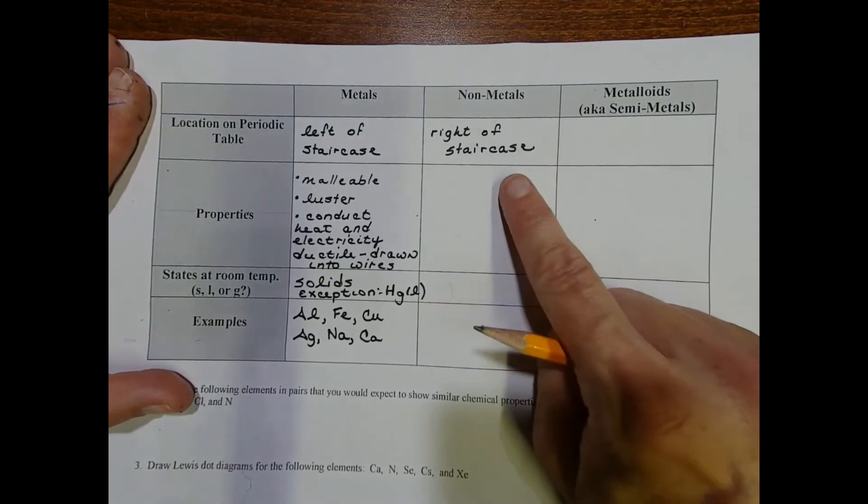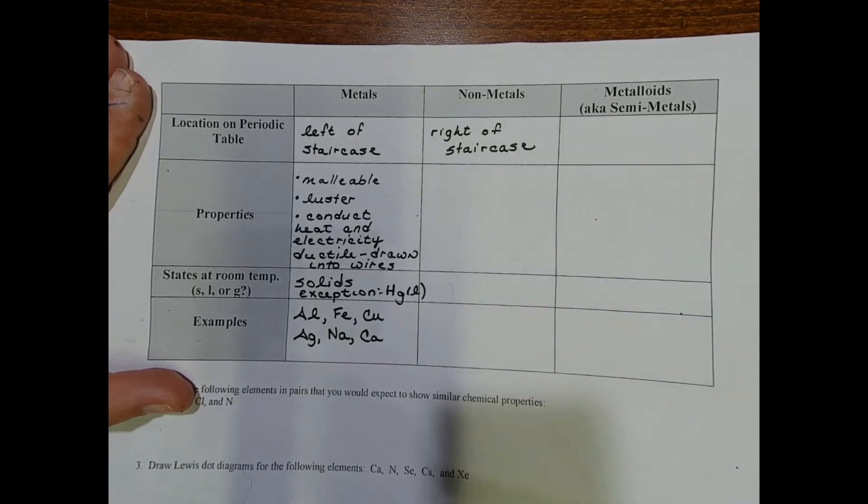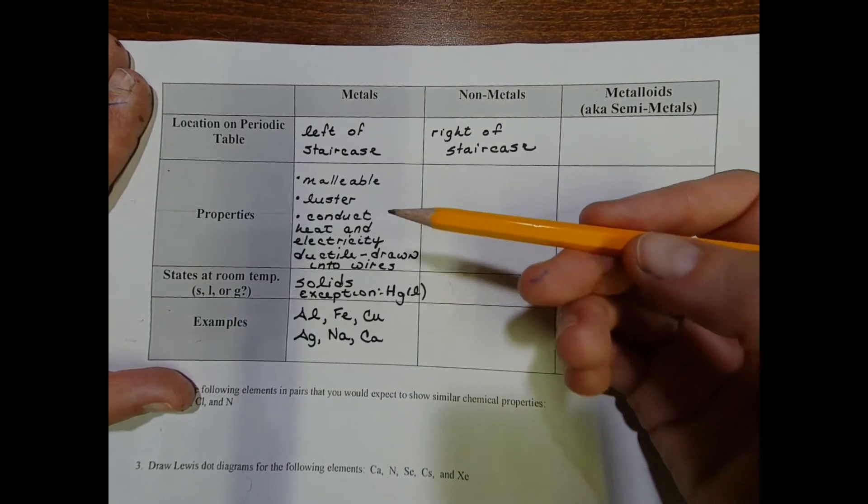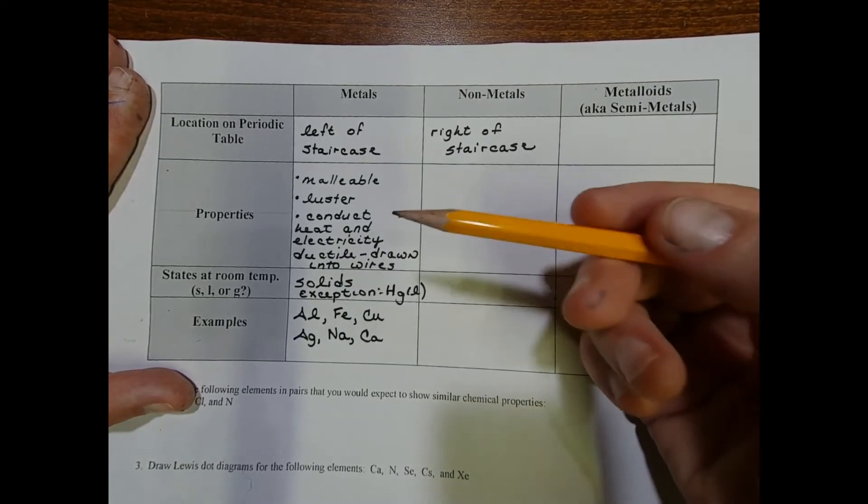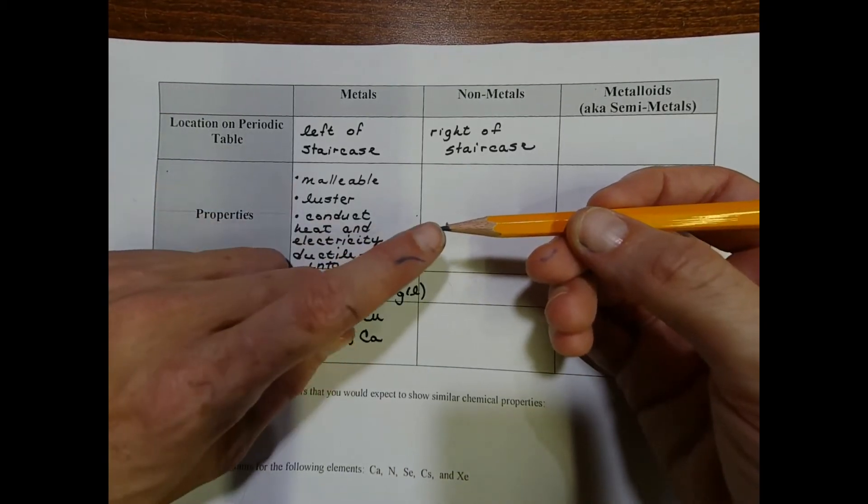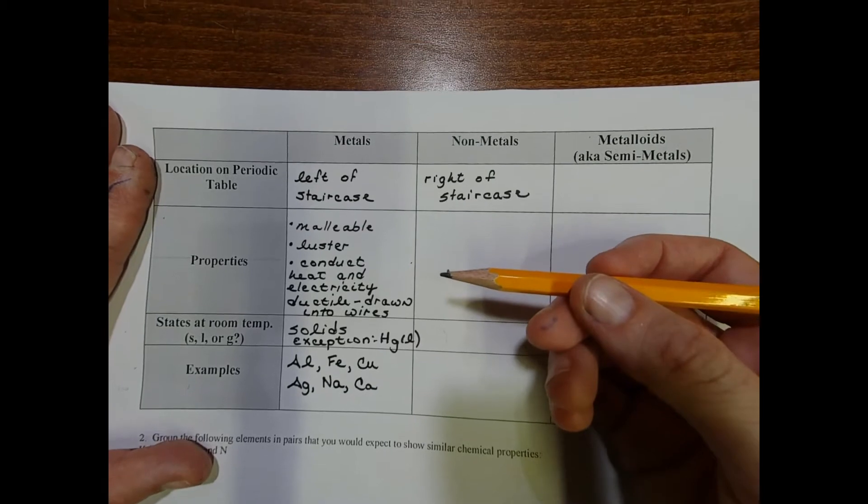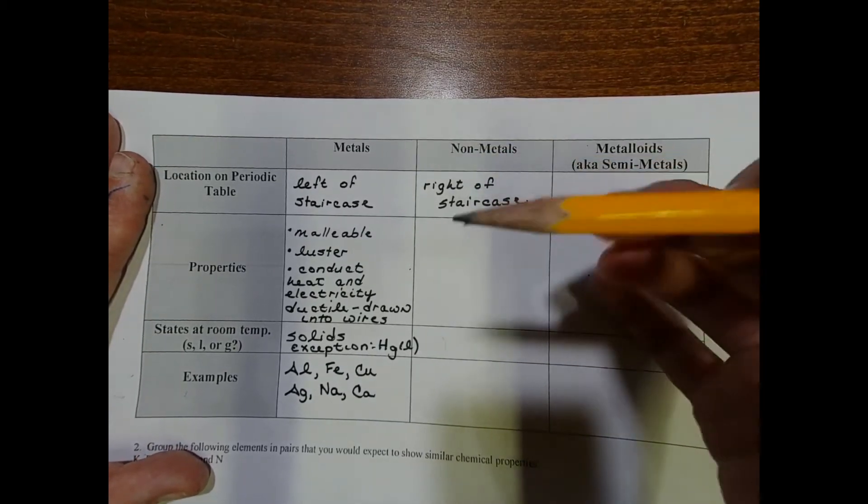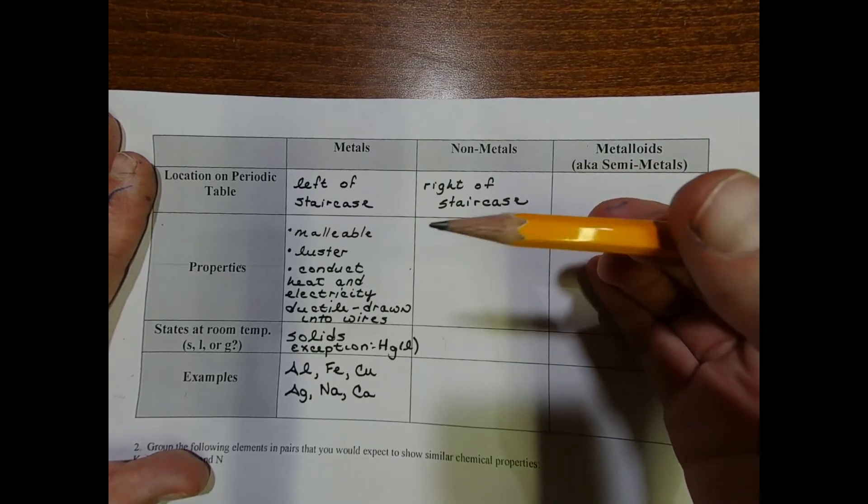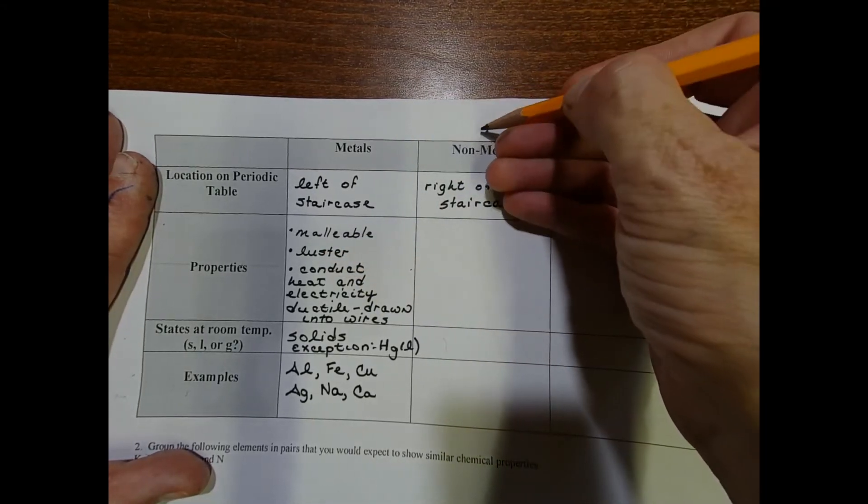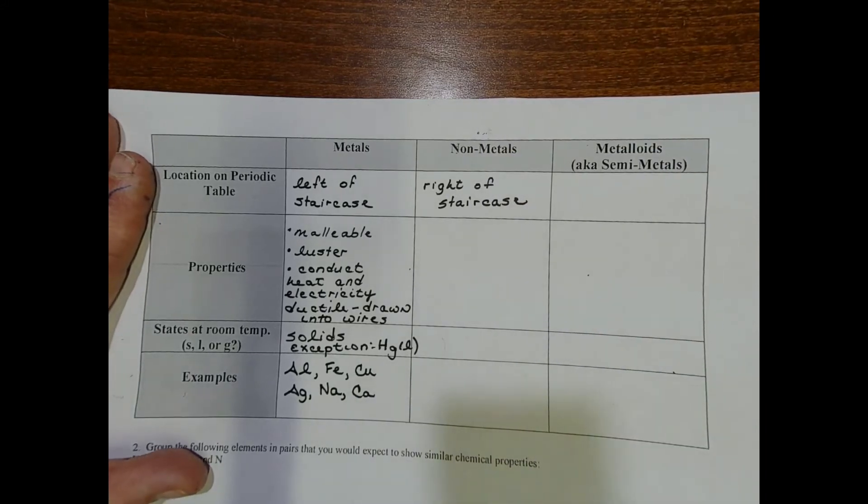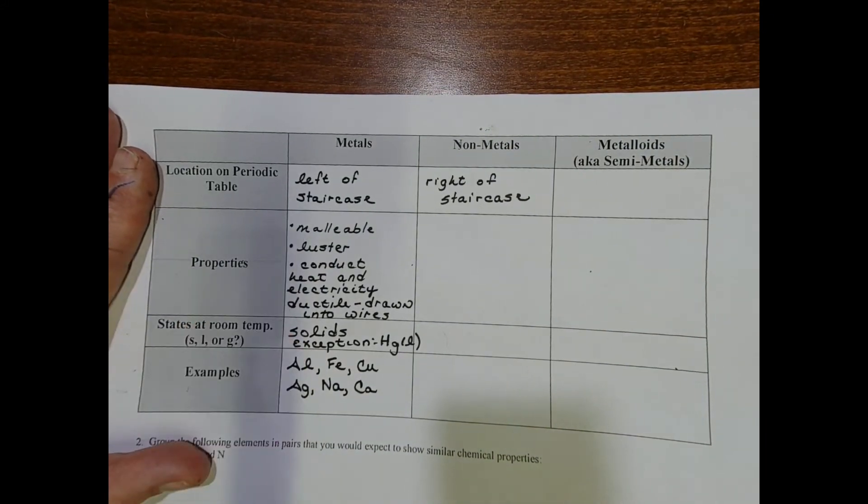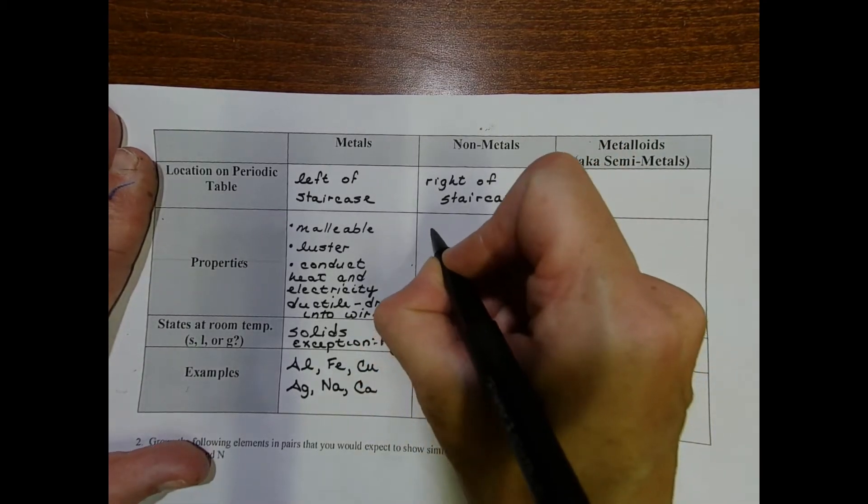The non-metals are located to the right of the staircase. The only example I could think of that I had at home was pencil lead. Now I know we call it lead, but pencil lead is actually graphite or carbon—this is elemental carbon. What about its properties? First off, if you look at your own pencils, not very shiny, so no luster. The other thing is that it breaks really easily, so it's not malleable like the aluminum foil or the steel wool. It's brittle.